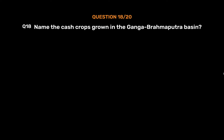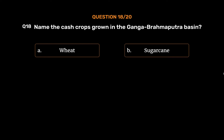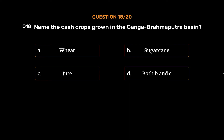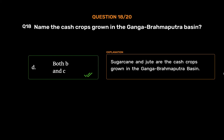Question number 18. Name the cash crops grown in the Ganga Brahmaputra Basin. Option A: Wheat. Option B: Sugarcane. Option C: Jute. Option D: Both B and C. The correct answer is Option D, Both B and C. Sugarcane and jute are the cash crops grown in the Ganga Brahmaputra Basin.